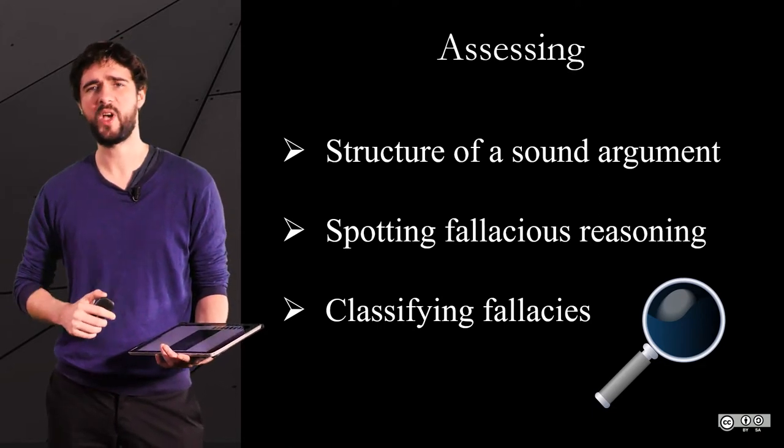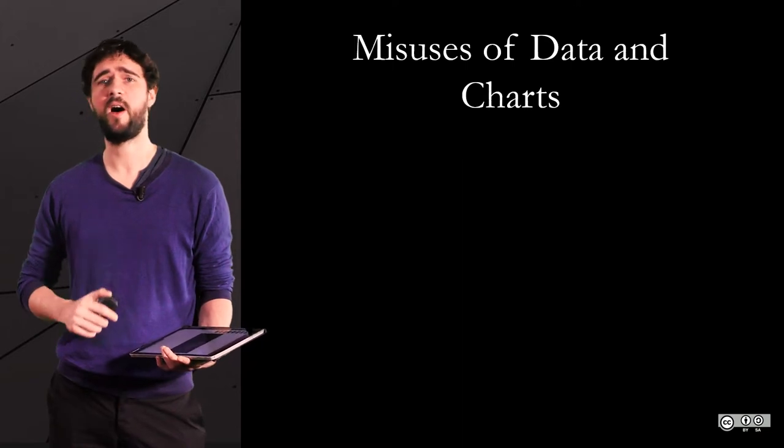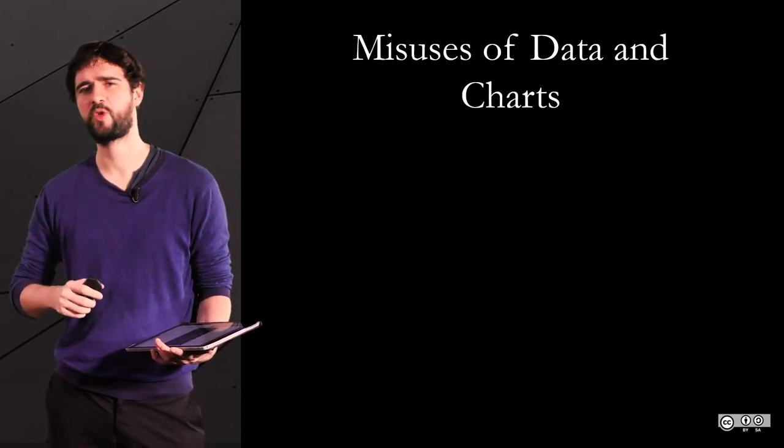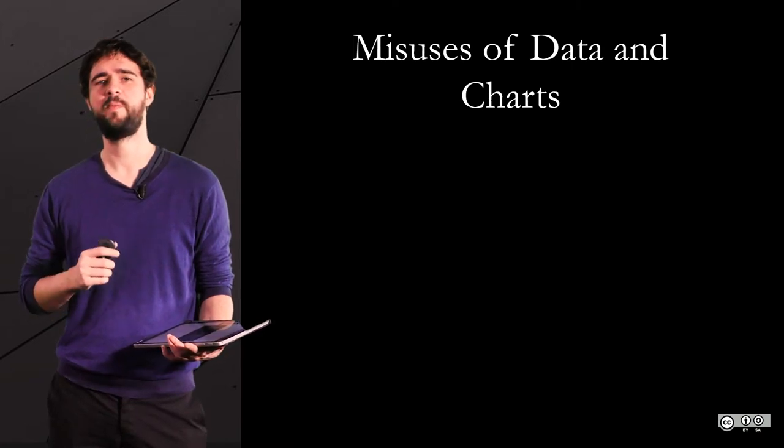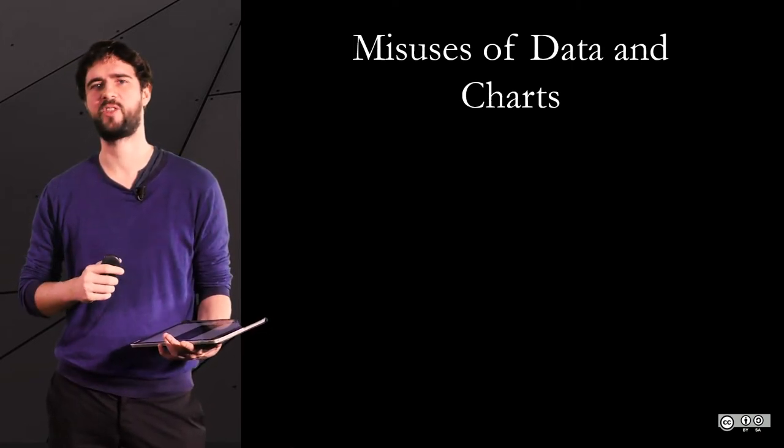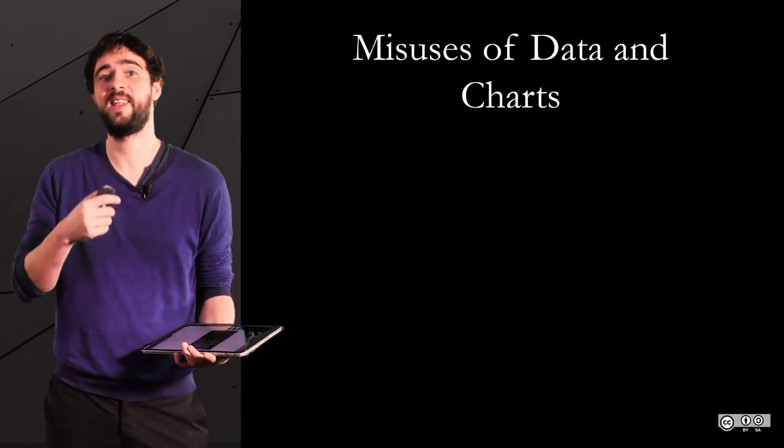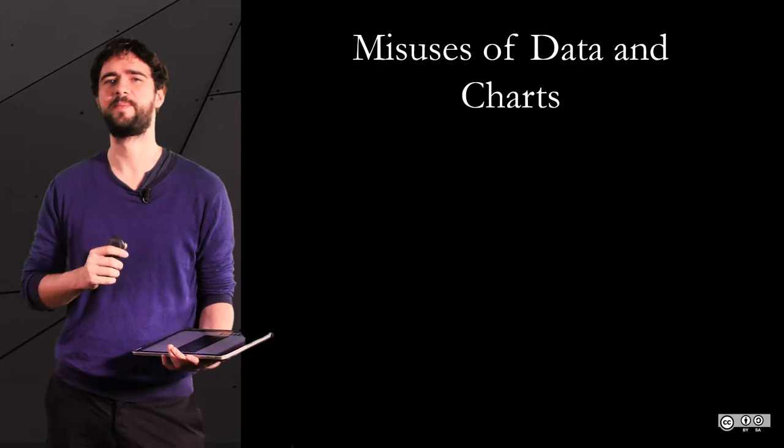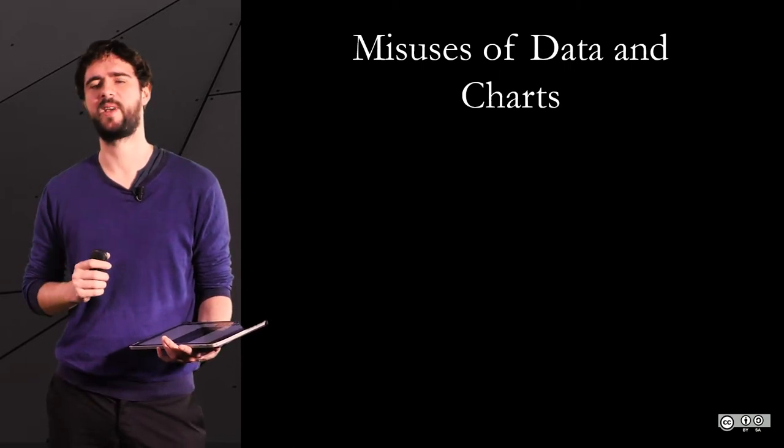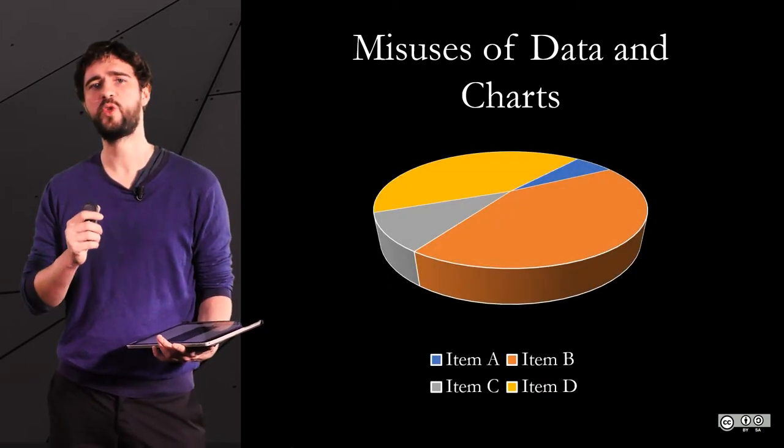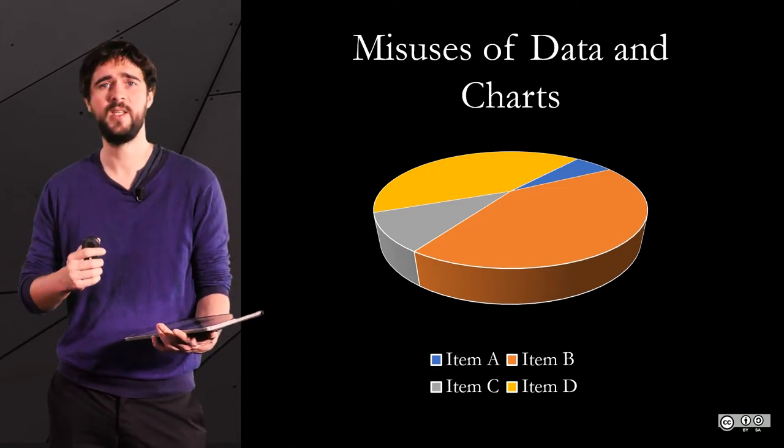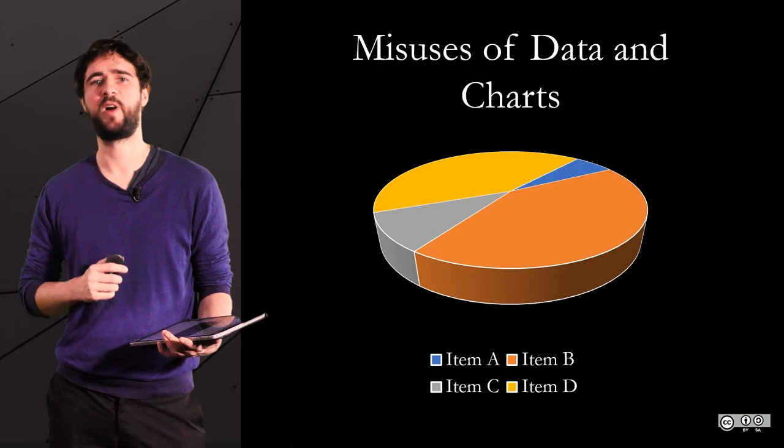But we won't stop there. In the field of data science, most of the time exercising your critical thinking skills means being able to scrutinize the structure of the arguments that are based on data, and detecting their flaws. But not only. We'll see a few other tricks together. Why you should be annoyed when you see someone using 3D to make a graph look good, for instance.